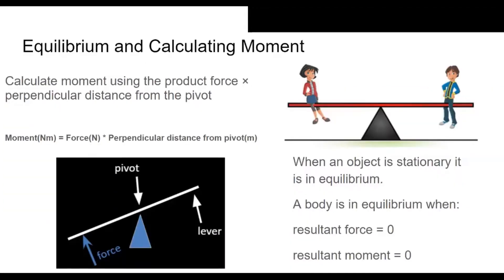Equilibrium and Calculating Moment. Calculate moment using the product force times perpendicular distance from the pivot. Moment in newton meters equals force newtons times perpendicular distance from pivot meters. When an object is stationary, it is in equilibrium. A body is in equilibrium when resultant force equals zero and resultant moment equals zero.